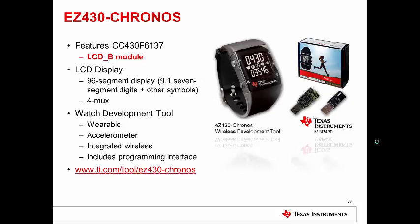The EZ430 Kronos kit features the CC430 F6137 device, which has an LCD-B module. The display is in a watch form factor, so it's a 96-segment display displaying the time and some other numerical symbols and other symbols. It is a Formux display. This watch development tool is not only wearable because it's in a watch form factor. It also includes an accelerometer, integrated wireless, and comes with its own programming interface.